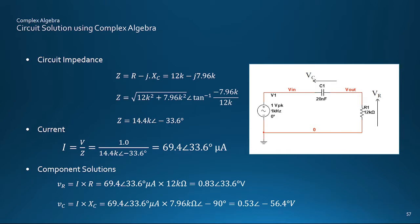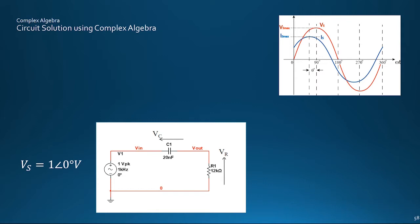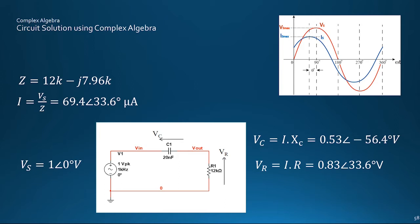Notice how the complex algebra cleanly keeps track of both gain and phase shift throughout the calculation, showing that the capacitor voltage lags the input voltage by 56 degrees, while the resistor voltage leads it by 33 degrees. The takeaway here is hopefully that complex algebra enables us to encapsulate both gain and phase information for the voltages, currents, and impedances in an AC circuit, so that analysis can be done using the same techniques as for solving DC circuits, but with algebra automatically keeping track of phase relationships as well as magnitudes, without the need for tricky geometry or trigonometry.